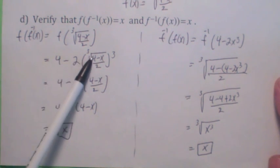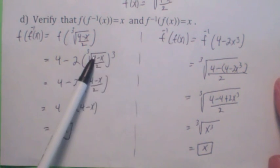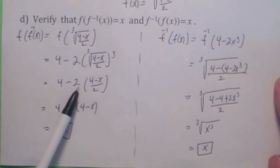You look at f of f inverse of x. That becomes f of the cube root of 4 minus x over 2. Then what does f do? 4 minus 2 times the cube of this, whatever you give it. The cube and the cube root undo each other, so you just get this. The 2s cancel. Now when you use the distributive law, you get x.